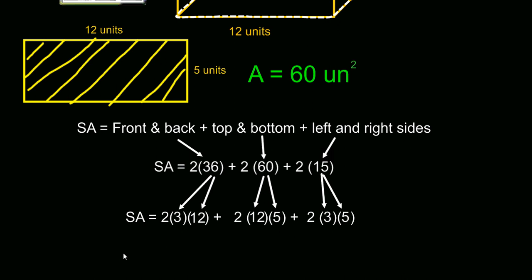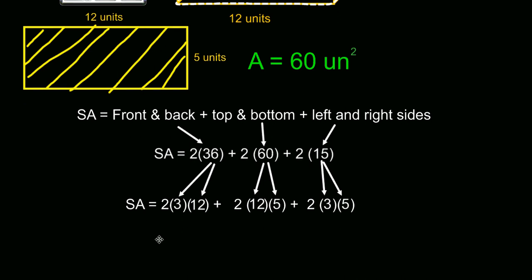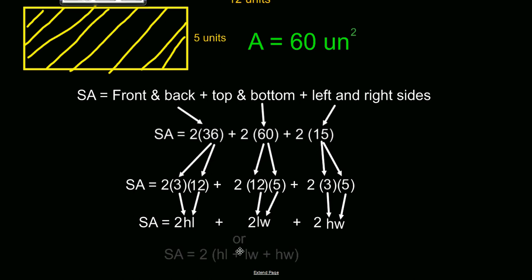When we take these measurements here and we try to illustrate what is actually taking place, we have the height times the length because 3 is the height and 12 is the length. The length times the width. 12 is the length and 5 is the width. And again, the height times the width because 3 is the height and 5 is the width. And this gives us a formula. And this is actually the formula that's used to solve for surface area of a rectangular prism. 2 times height times length plus length times width plus height times width. And when you solve that for this particular one, you would have 30 plus 120 plus 72 which equals 222 units squared.